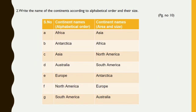Now write the name of the continents according to alphabetical order, and then according to their size in ascending order. Alphabetical order: Africa, Antarctica, Asia, Australia, Europe, North America, South America.